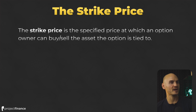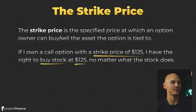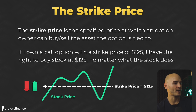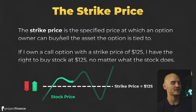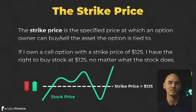The strike price is the specific price at which an option owner can buy or sell the asset the option is tied to. If I own a call option with a strike price of $125, I have the right to buy shares of stock at $125 no matter what the stock price does. As the stock price rises, the contract's ability to buy shares at $125 gets more and more valuable. So that's a first hint as to why call options go up in value with the stock price.